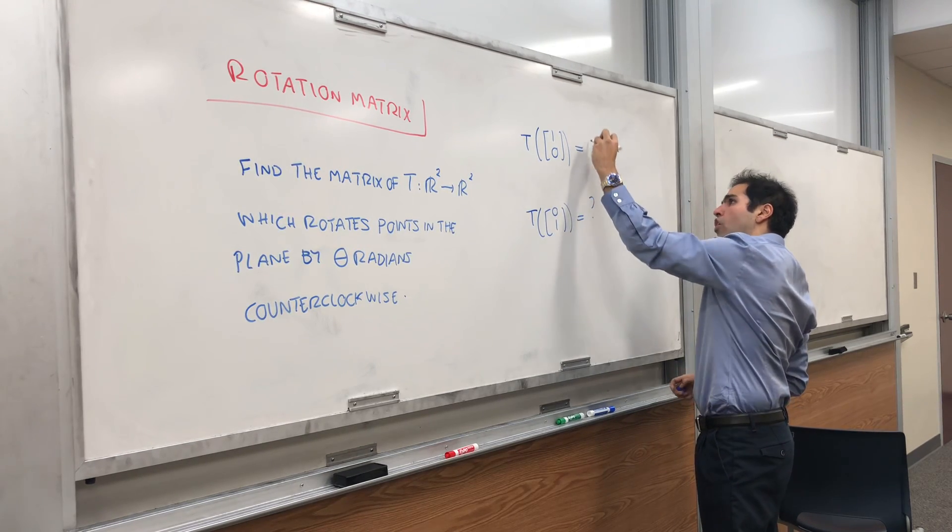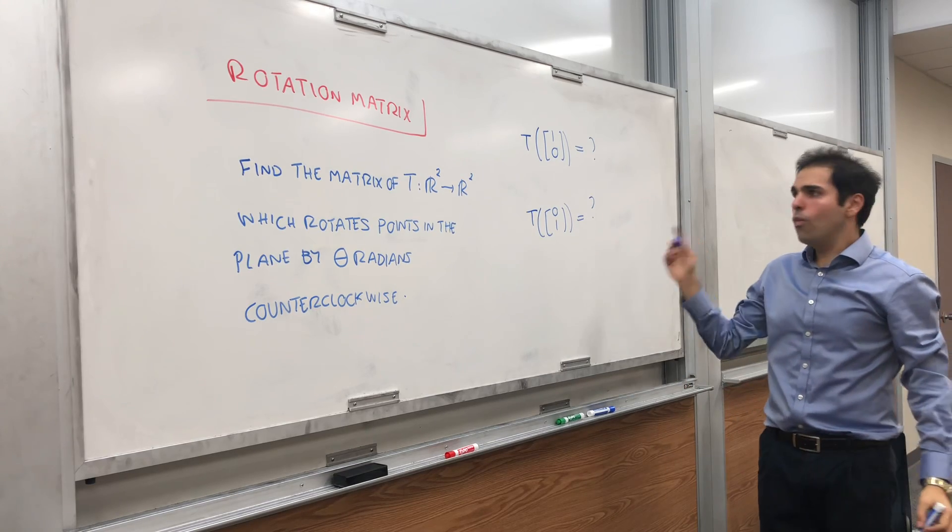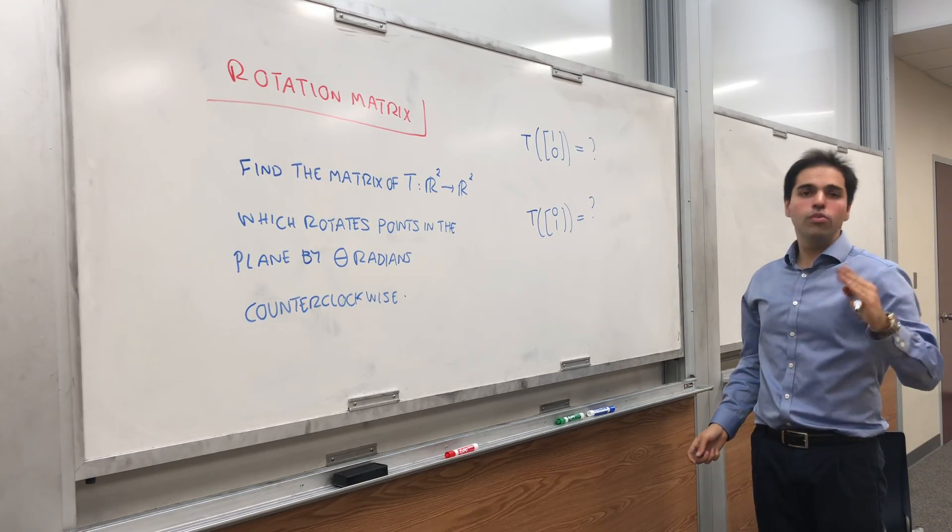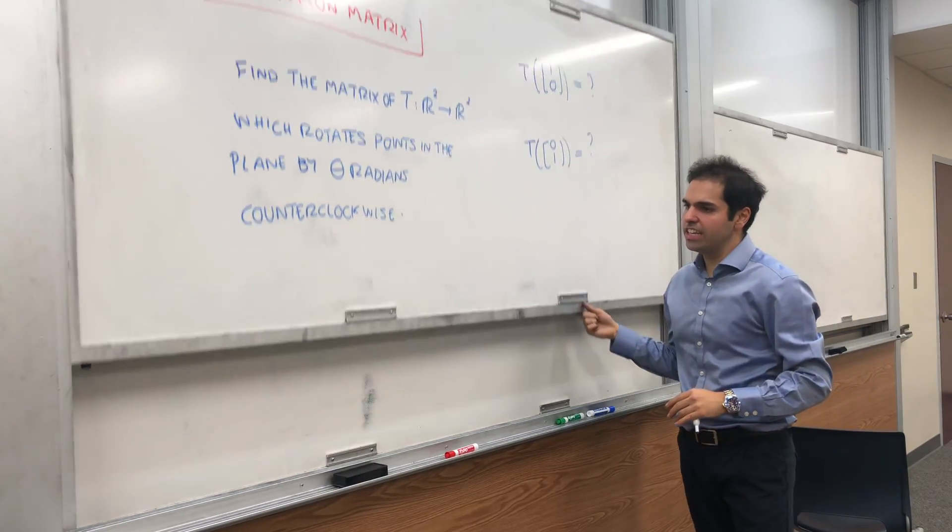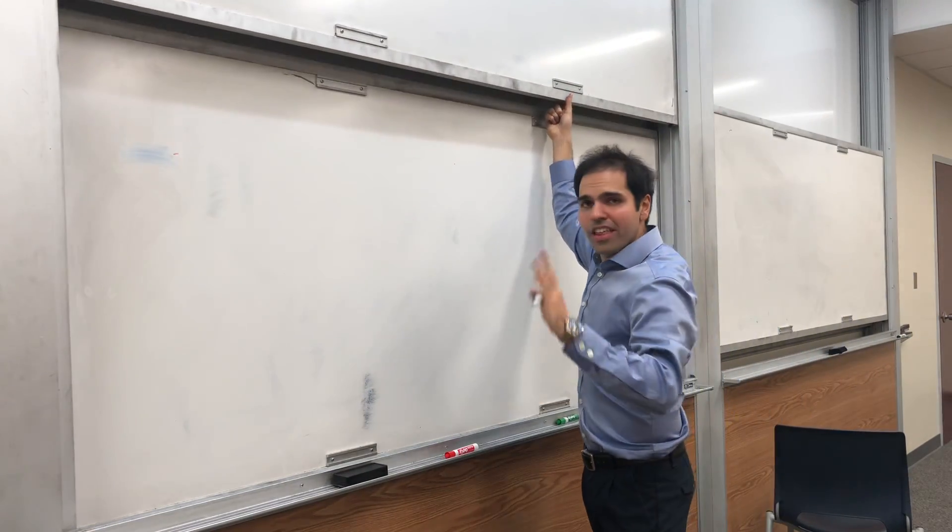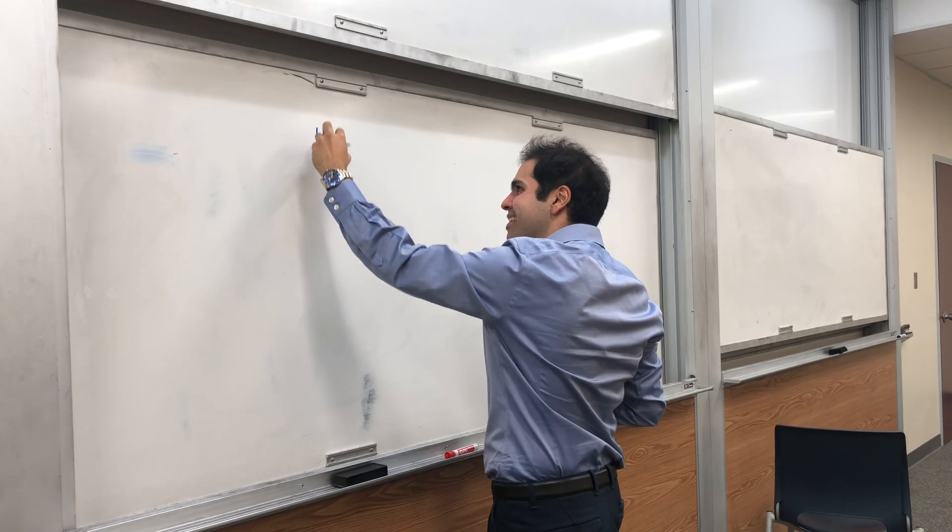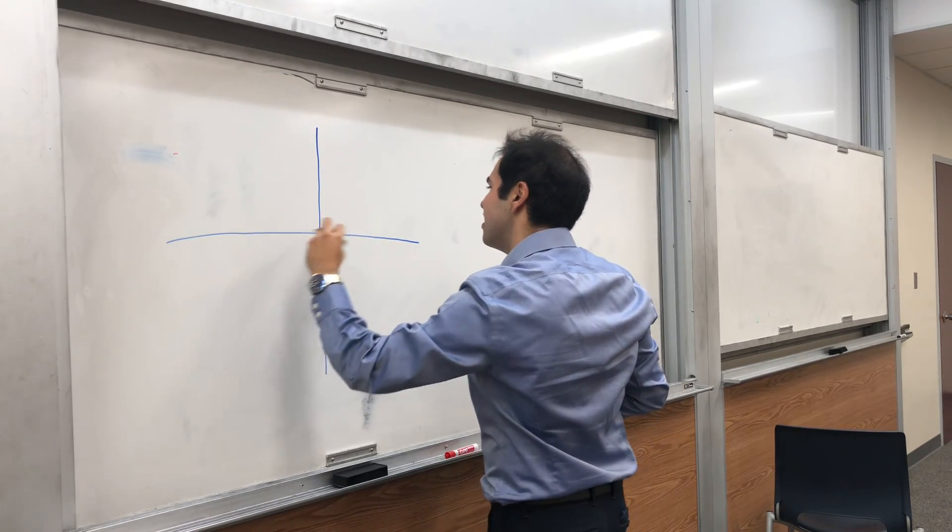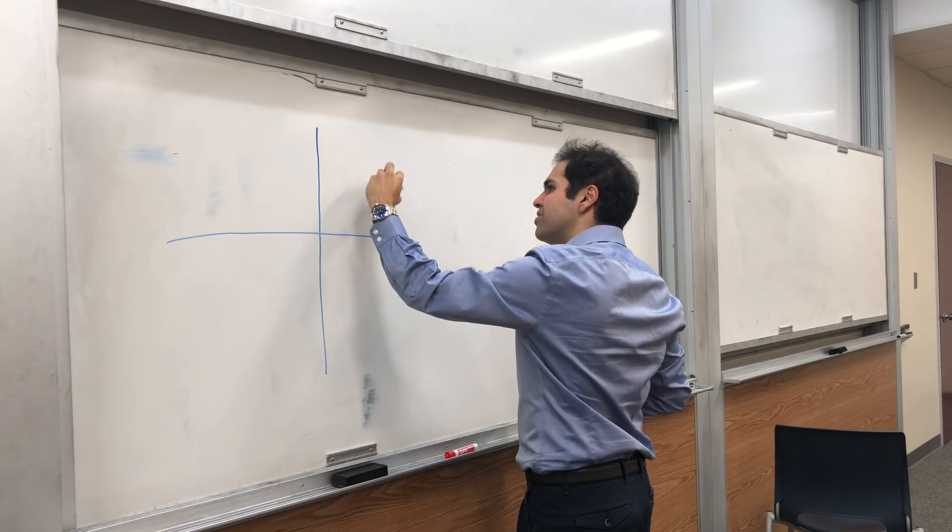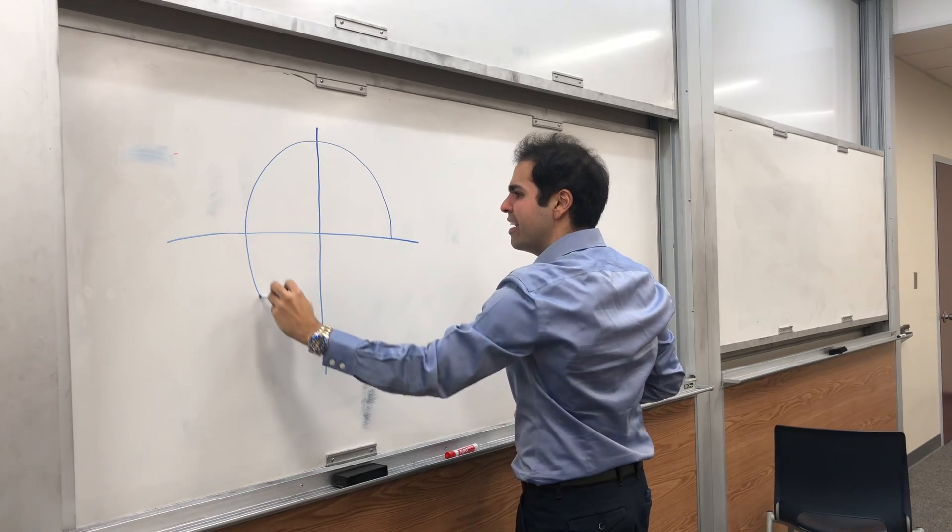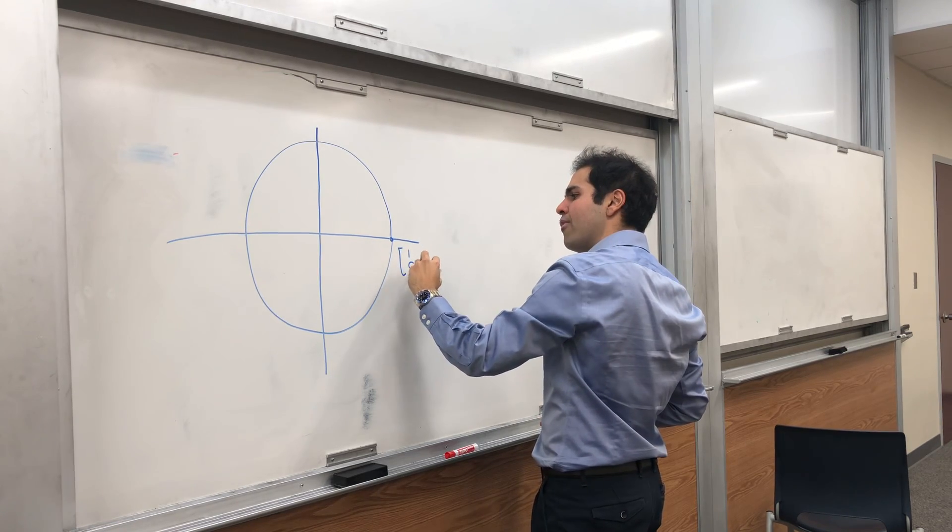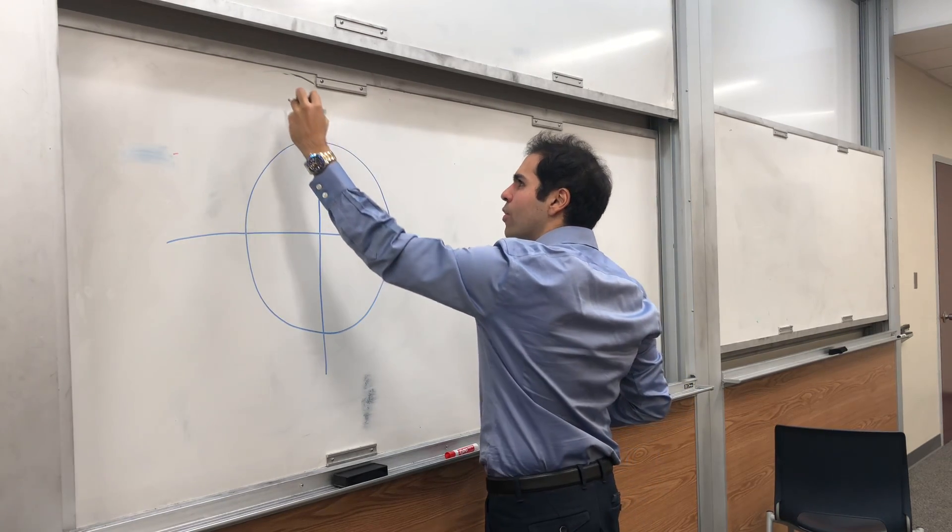Now, in other words, all you need to figure out is what happens to (1,0) and (0,1) if you rotate them counterclockwise by theta radians. So let's do that, and here a picture is worth 1,000 words. So again, you have, let's say, the unit circle. And I choose a unit circle because we have (1,0) and (0,1).